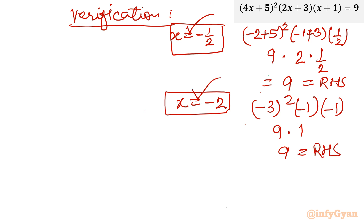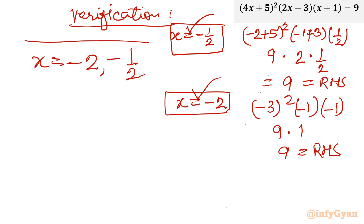If you want to check the complex values also, take the help of Wolfram Alpha for verification. I hope this video was meaningful to you. Do not forget to like, share, and subscribe. The final real solutions are x = −2 and x = −1/2. Bye-bye till next video, good luck and take care.